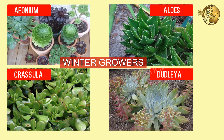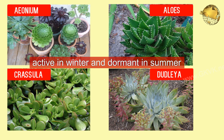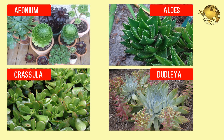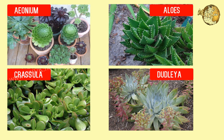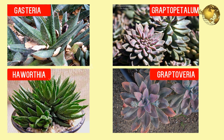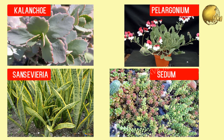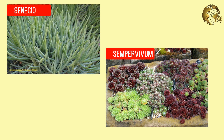The Common Winter Growers are those plants which have a dormancy in summer, meaning they are active in winter and dormant in summer season. They are grouped into the following species: Aeonium, Aloe vera, Crassula, Dudleya, Gasteria, Graptopetalum, Graptoveria, Haworthia, Kalanchoe, Pelargonium, Sansevieria, Sedum, Senecio, Sempervivum.